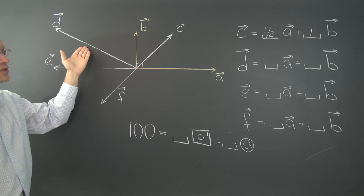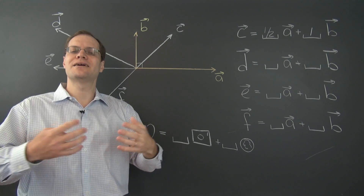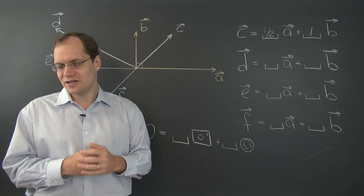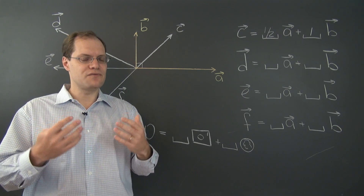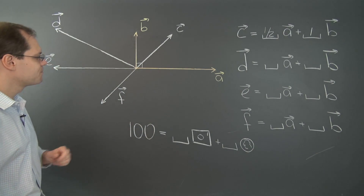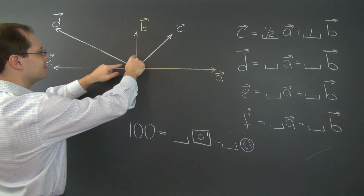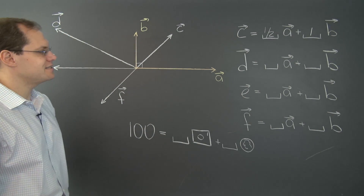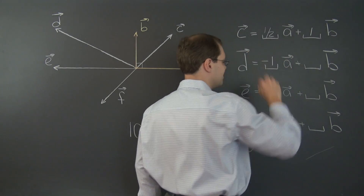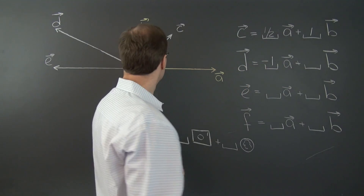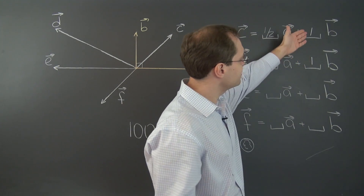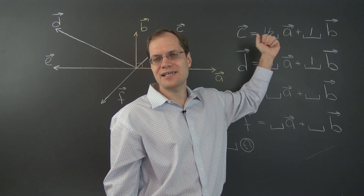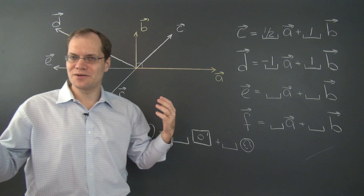Now we're ready to move on to the second example, vector D. I encourage you to pause and try it yourself. If I were to flip vector A it would coincide with E, so by the parallelogram rule we take minus A and B to get D. So minus 1 times A plus 1 times B — writing it casually: minus A plus B, or B minus A. And the earlier result we write casually as half A plus B.